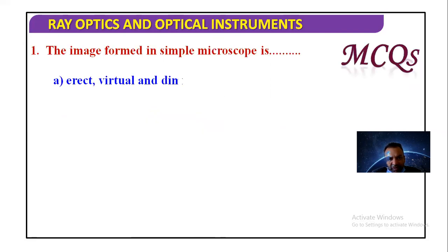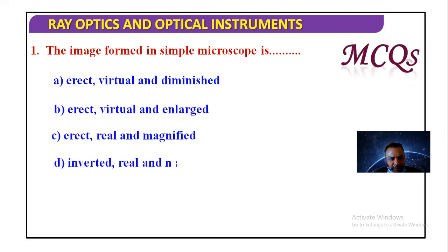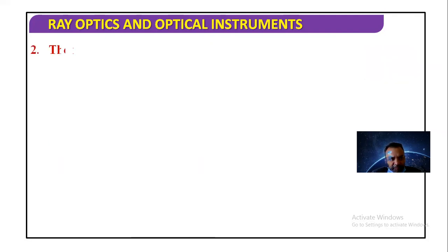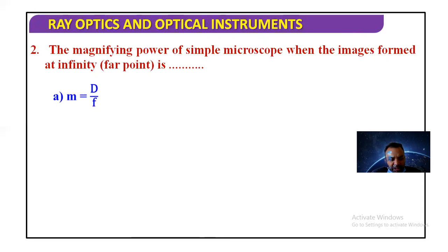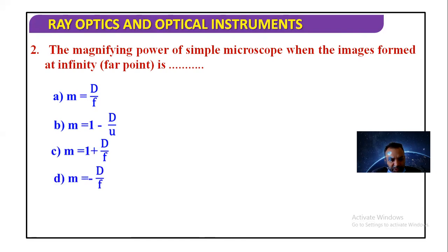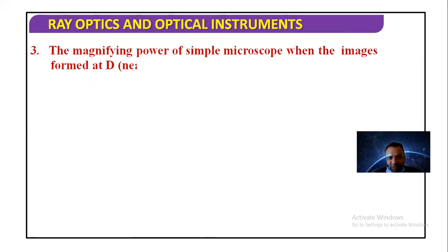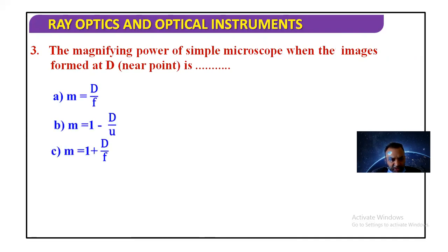Let us take some multiple choice questions. The image formed in a simple microscope is: (a) erect, virtual and diminished — wrong; (b) erect, virtual and enlarged — this is correct, so option B is right. The magnifying power of a simple microscope when the image is formed at the far point: m = D/f — option A is correct. The magnifying power when the image is formed at D: m = 1 + D/f — option C is correct.